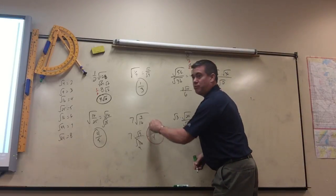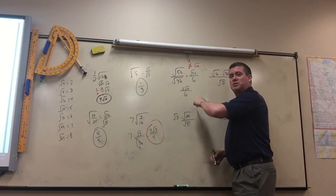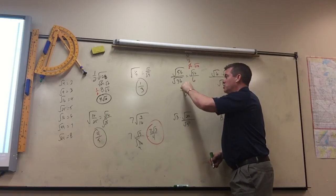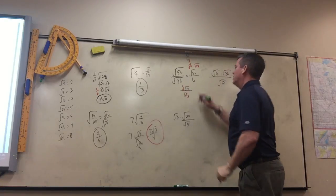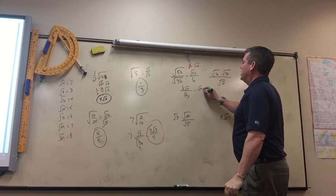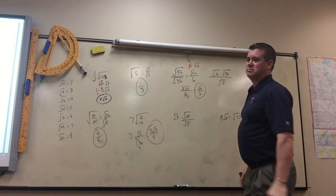So this is 2 square roots of 14 over 6. So like here, 2 over 7 over 4 wouldn't reduce, but here 2 over 6 will. So 2 goes into itself once, into there 3. So it's just the square root of 14 over 3.